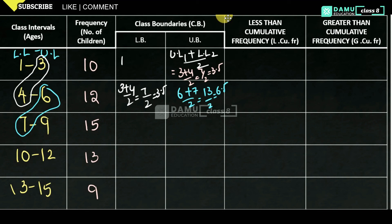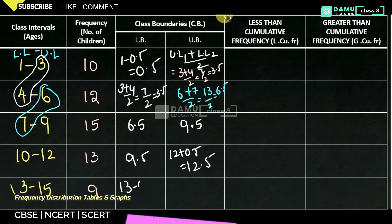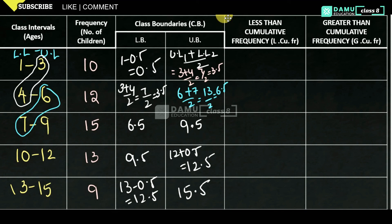For boundaries, we have to add and subtract 0.5. So the boundary values are: 0.5–3.5, 3.5–6.5, 6.5–9.5, 9.5–12.5, and 12.5–15.5. For example, 12 plus 0.5 gives 12.5, and 13 minus 0.5 gives 12.5. These are the lower and upper boundary values of the corresponding class intervals.